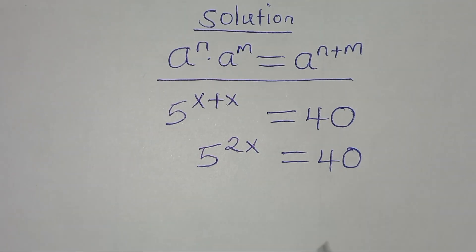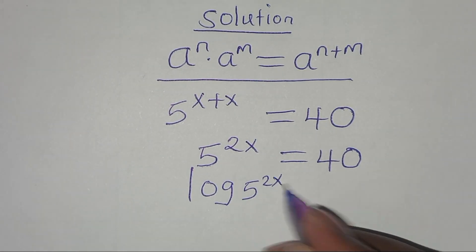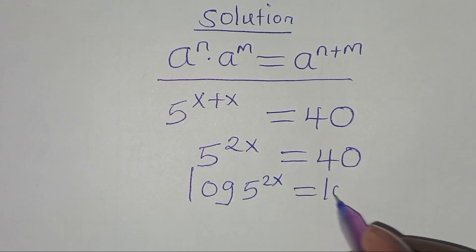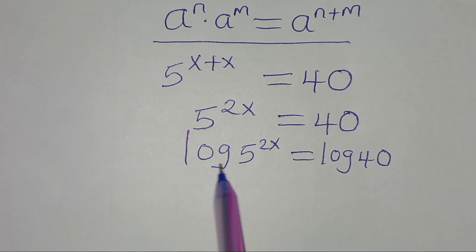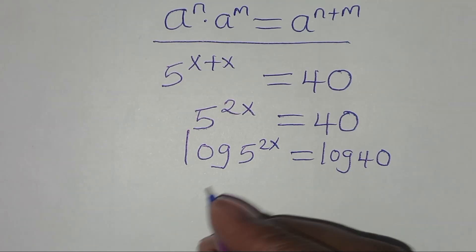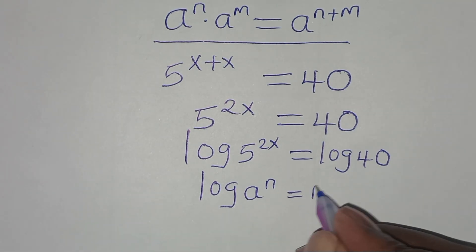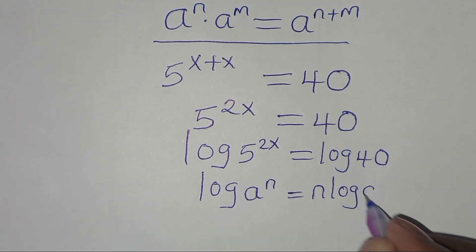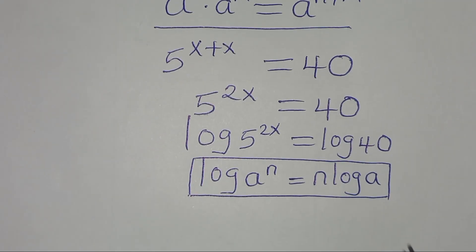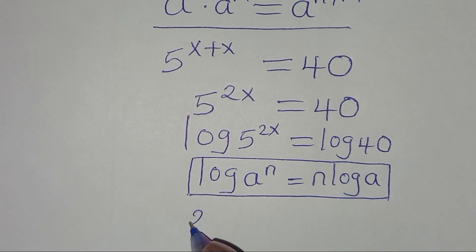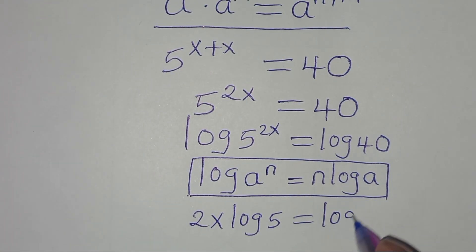To solve for x, we apply log to everything on both sides — that is, log of 5 to the power 2x equals log of 40. Now log of 5 to the power 2x is in the form of log of a to the power n, which we can express as n times log a. This is the power rule property of logarithms. Applying this property, we get 2x log 5 equals log 40.